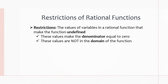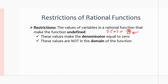Starting off with restrictions, let's look at what a restriction actually is. Restrictions for a rational expression are values for the variables that make the function or expression undefined, which means that it puts the expression in the form of a number over zero. This zero in the denominator cannot happen — it means the function is undefined. So we need to find the values that make this happen; those are the restrictions.